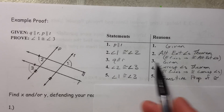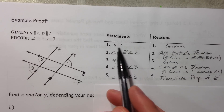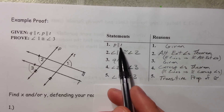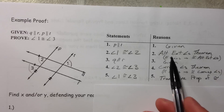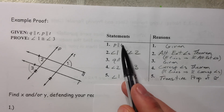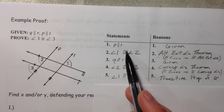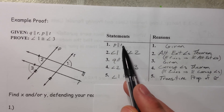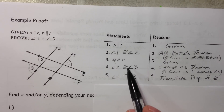One thing to look out for: make sure you've shown that those lines are parallel before you use the alternate exterior angles theorem. Parallel lines tell me the alternate exterior angles are congruent. If you don't know they're parallel, you don't know they're congruent.